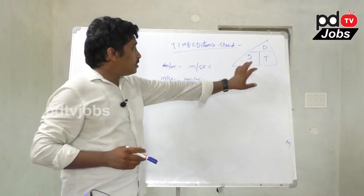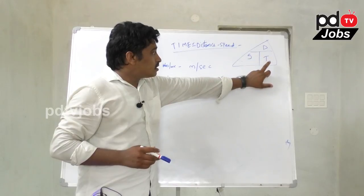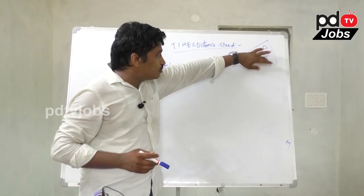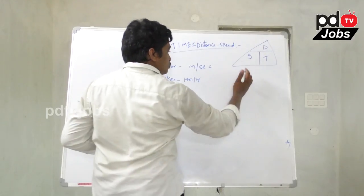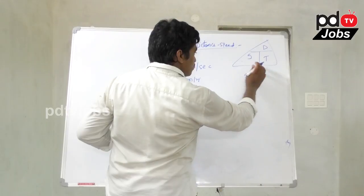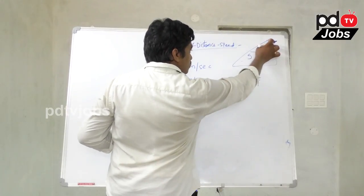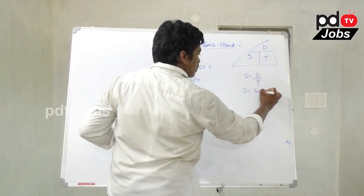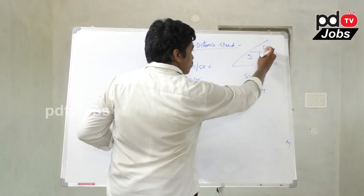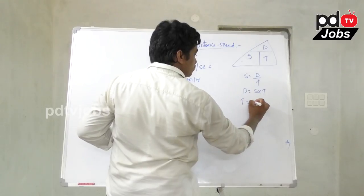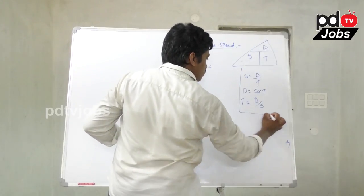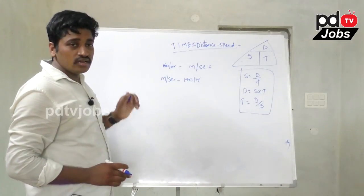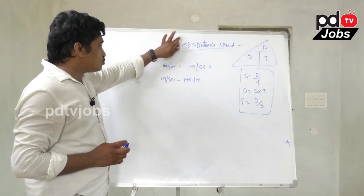Speed equals Distance divided by Time. Time equals Distance divided by Speed. Distance equals Speed multiplied by Time. These three are the basic formulas. The basic conversion between units is also important. Both are important in this topic.